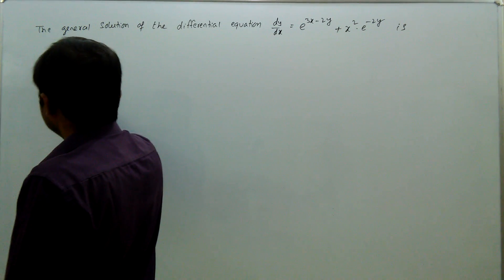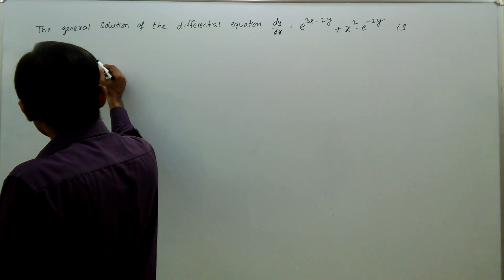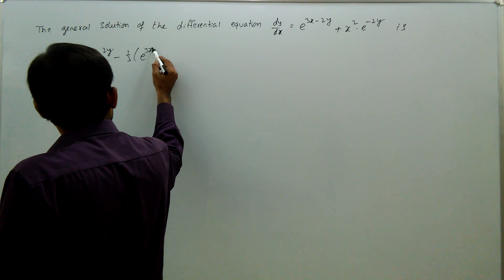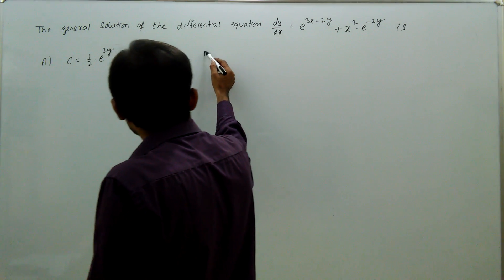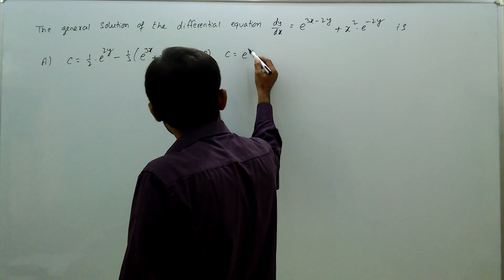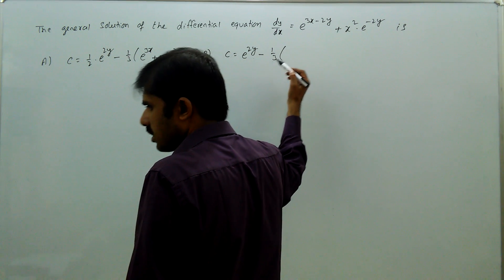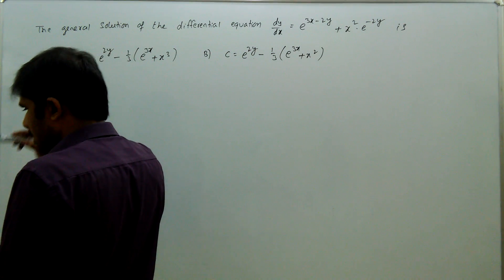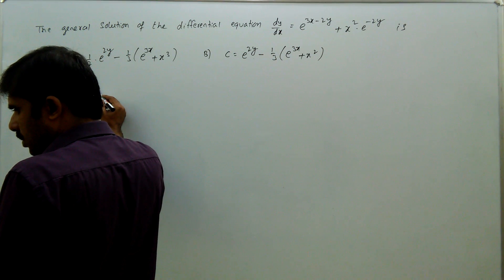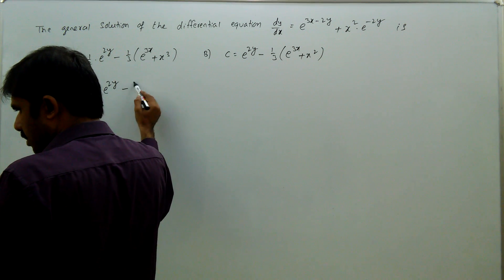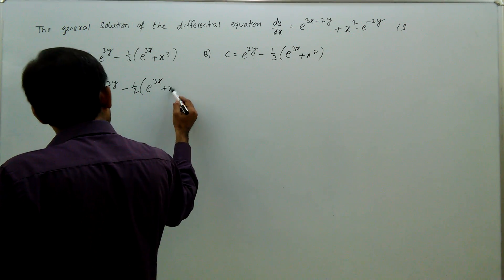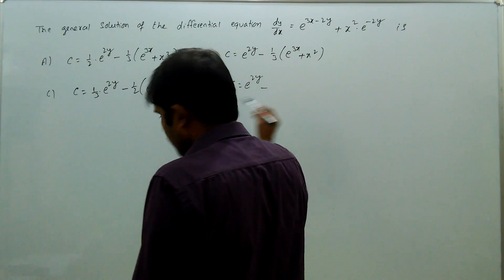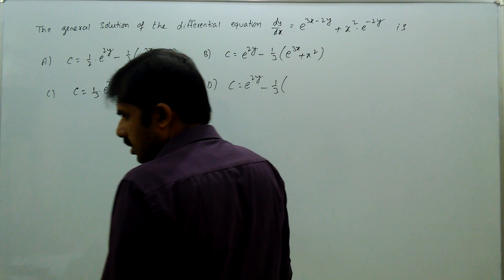Option A: c = (1/2)e^(2y) - (1/3)e^(3x) + x³. Option B: c = e^(2y) - (1/3)e^(3x) + x². Option C: c = (1/3)e^(2y) - (1/2)e^(3x) + x². Option D: c = e^(2y) - (1/3)e^(3x) + x³.